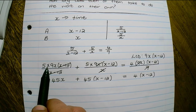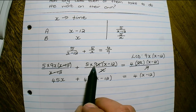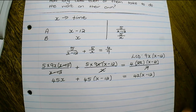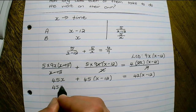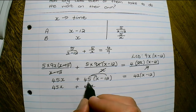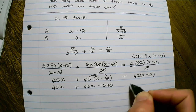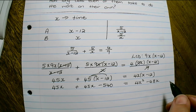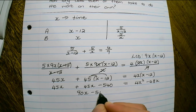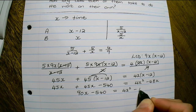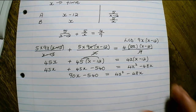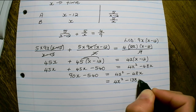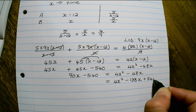So I have 5 times 9x which is 45x, then 5 times 9 which is 45 times (x minus 12), equals 4x times (x minus 12). Multiplying out: 45x plus 45x minus 540 equals 4x squared minus 48x. That is 90x minus 540 equals 4x squared minus 48x. Rewriting in standard form: 4x squared minus 138x plus 540 equals 0.